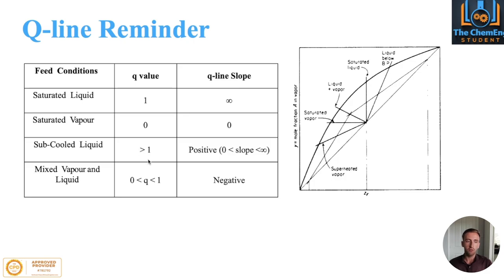For sub-cooled liquid, your Q value will be greater than 1 and your slope will be positive. If you have a mixed vapor-liquid system, your Q-line slope will be negative.